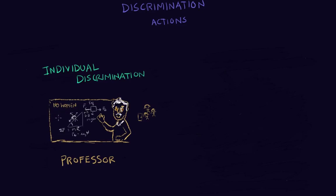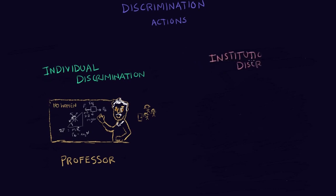That is just how he is. He says, hey, no women are allowed to learn physics in my class. So because he is an individual person and he's acting against a certain type of people — based on sex in this case, but it could have been on age, race, religion, whatever — that is individual discrimination. He is taking action; it's him, one person.